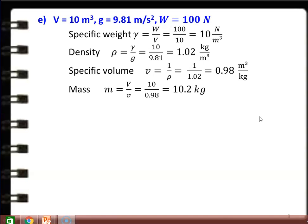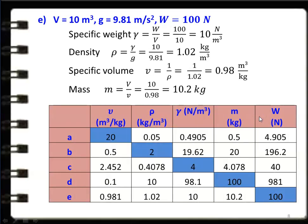Subdivision E: V = 10 m³, g = 9.81 m/s², weight = 100 N. Specific weight γ = W/V = 100/10 = 10 N/m³. Density ρ = γ/g = 10/9.81 = 1.02 kg/m³. Specific volume v = 1/ρ = 1/1.02 = 0.98 m³/kg. Mass = V/v = 10/0.98 = 10.2 kg. The consolidated table with all five answers is shown.